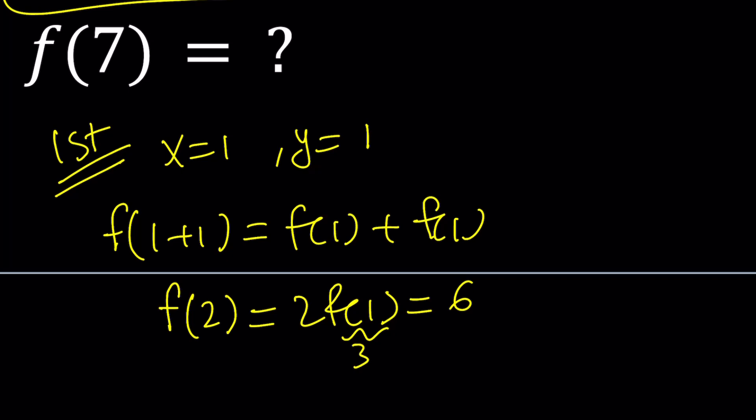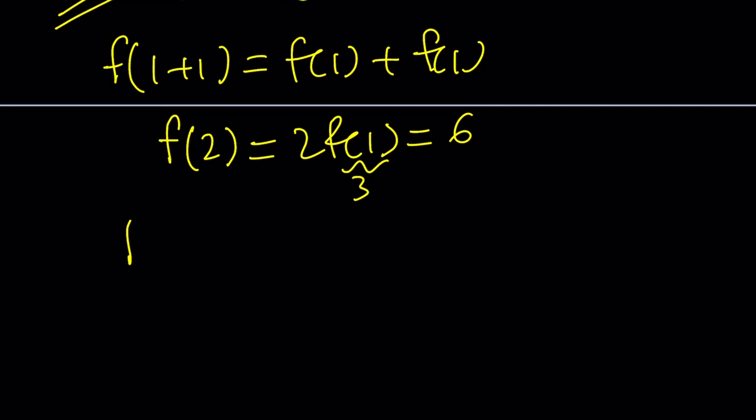So we can go ahead and plug it in. If f of 1 is equal to 3, then 2 times 3 is going to be 6. Therefore, if f of 1 is equal to 3, then f of 2 is equal to 6. But how does this help us find f of 7? We're going to get there little by little. From 1, we got to 2, which means we can double and get to 4.